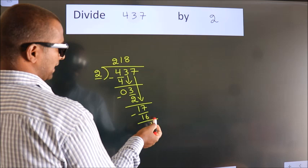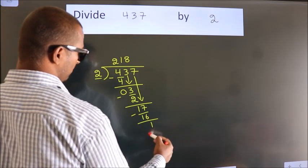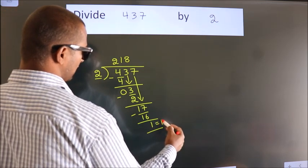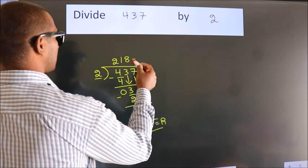No more numbers to bring it down. So, we stop here. This is our remainder. This is our quotient.